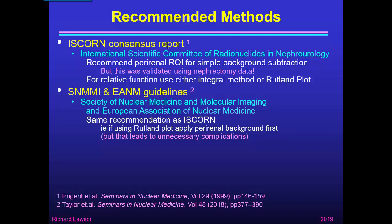So that means if you're using the Rutland plot, you apply the perirenal background subtraction first. In my opinion, that leads to unnecessary complications, which I'll discuss further in a separate talk about the Rutland method. But basically, both guidelines recommend using the perirenal region of interest for simple background subtraction, and then, if you want to perform blood background subtraction as well, going on to do the Rutland plot.